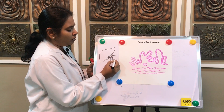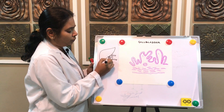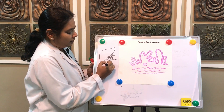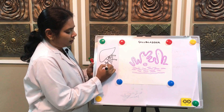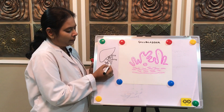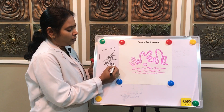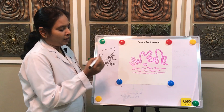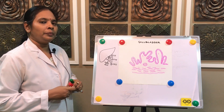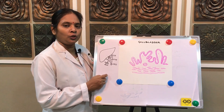From the gallbladder, one duct comes out called the cystic duct — it is the duct of the gallbladder. The cystic duct joins with the common hepatic duct to form the common bile duct. The common bile duct then joins with the main pancreatic duct and opens into the duodenum.